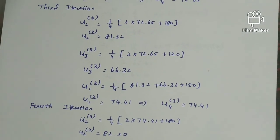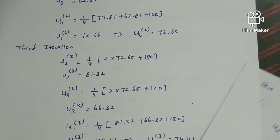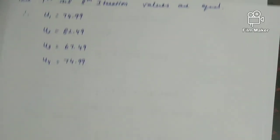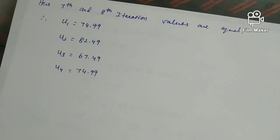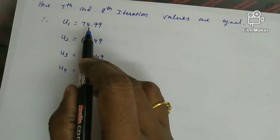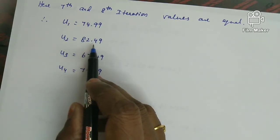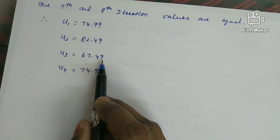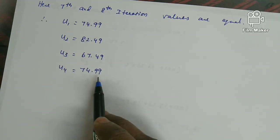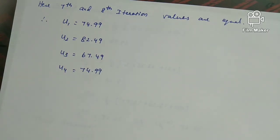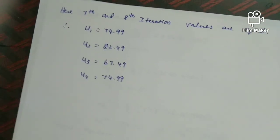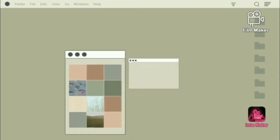Continuing with the second and subsequent iterations using the previous values, after the seventh and eighth iterations the values converge. The final answers are: u1 equals 74.99, u2 equals 82.49, u3 equals 67.49, and u4 equals 74.99 (since u4 equals u1). This completes the process of solving Poisson's equation using the standard five-point formula. Thank you for watching.